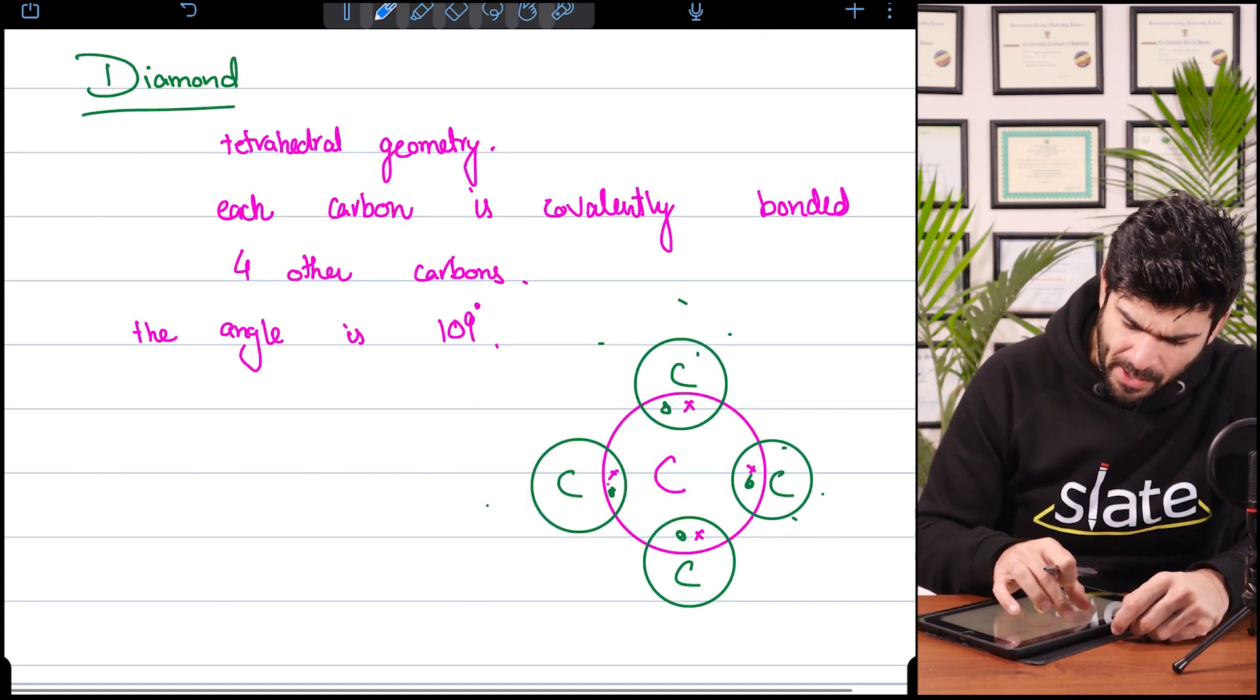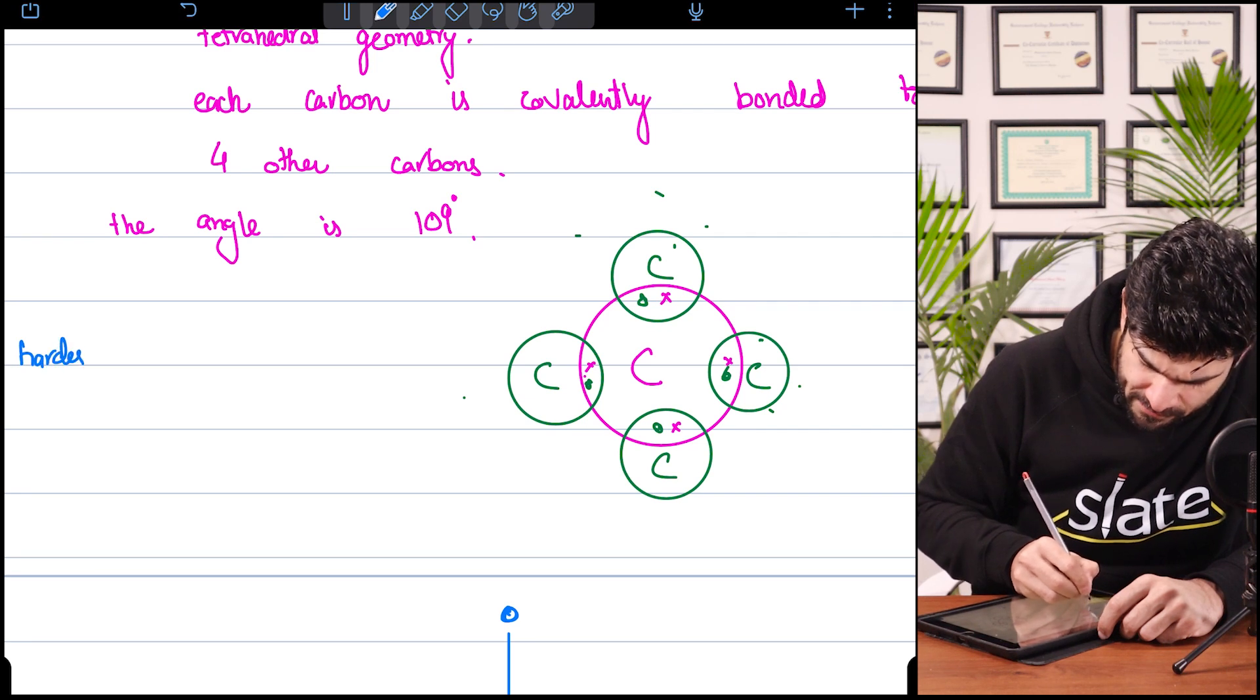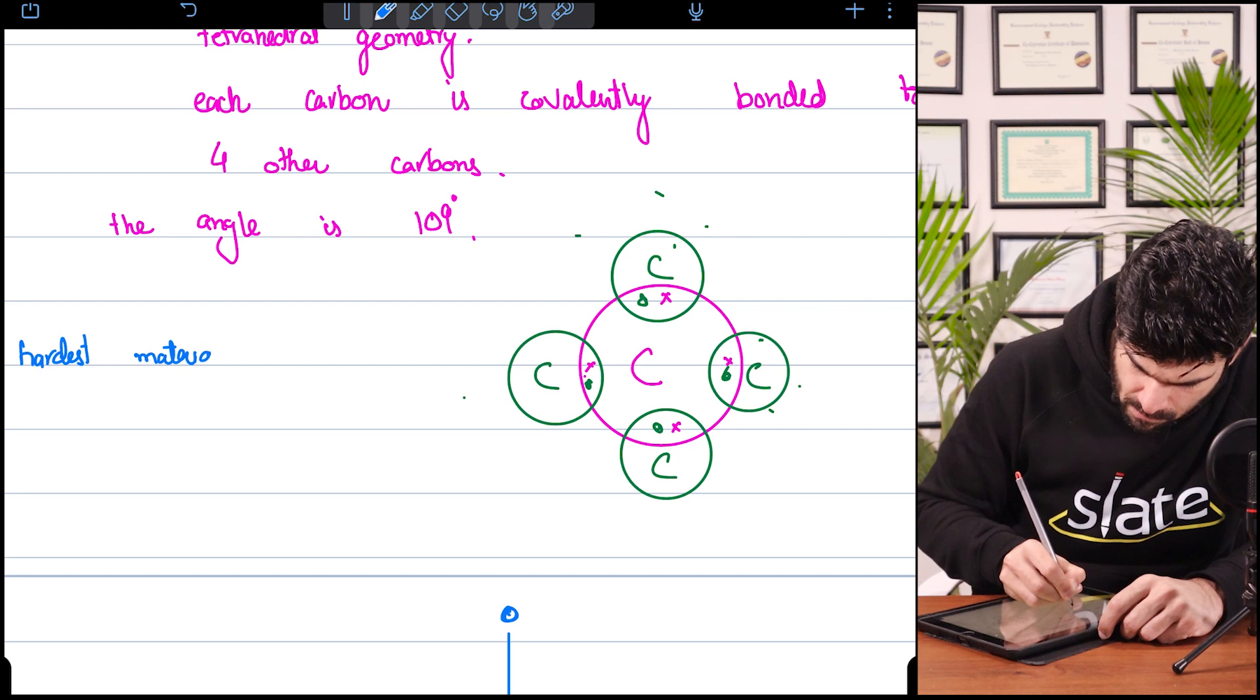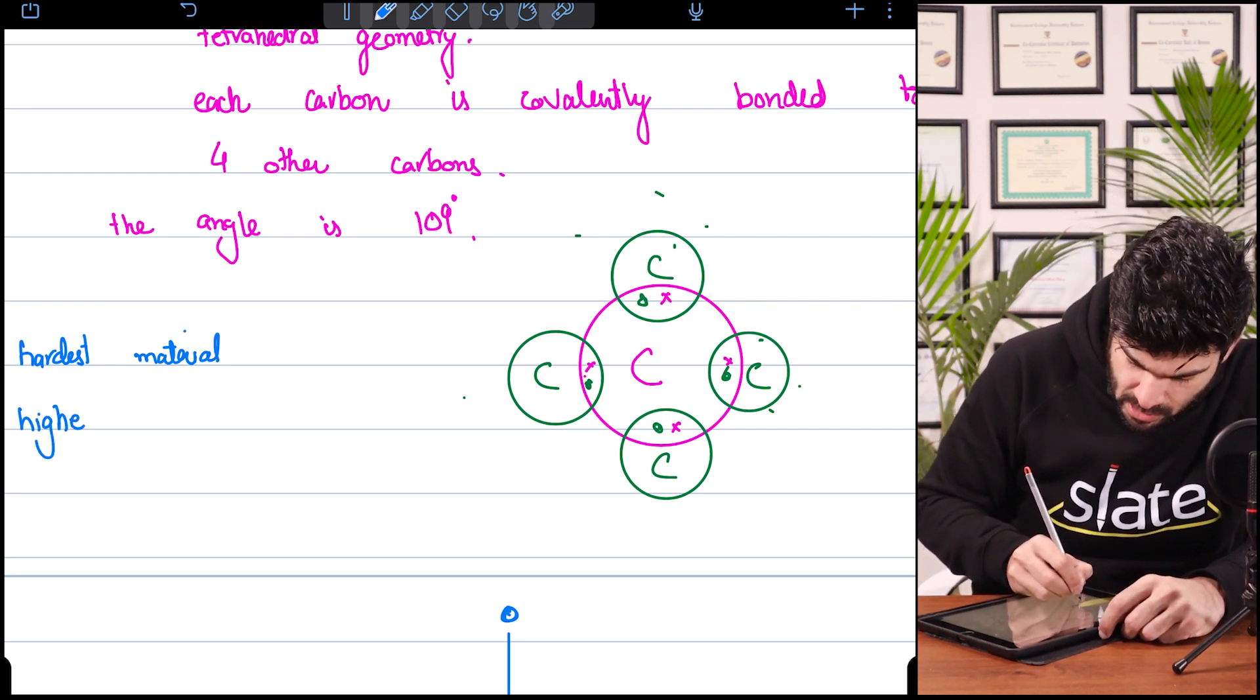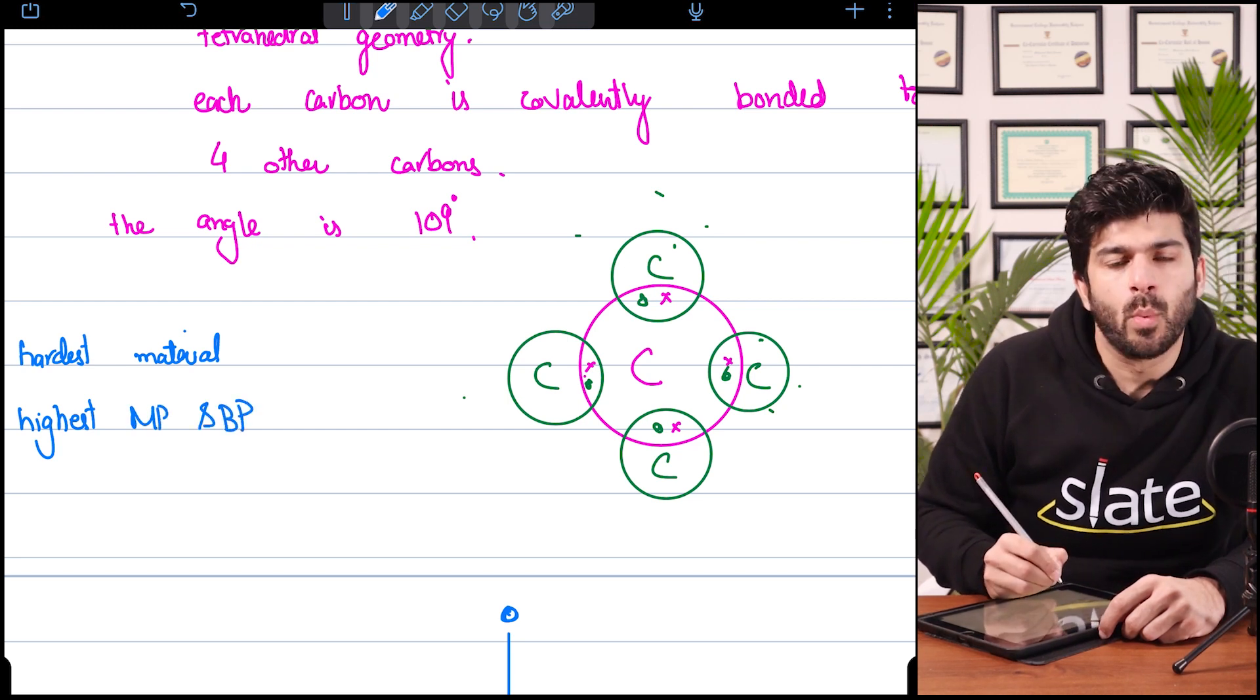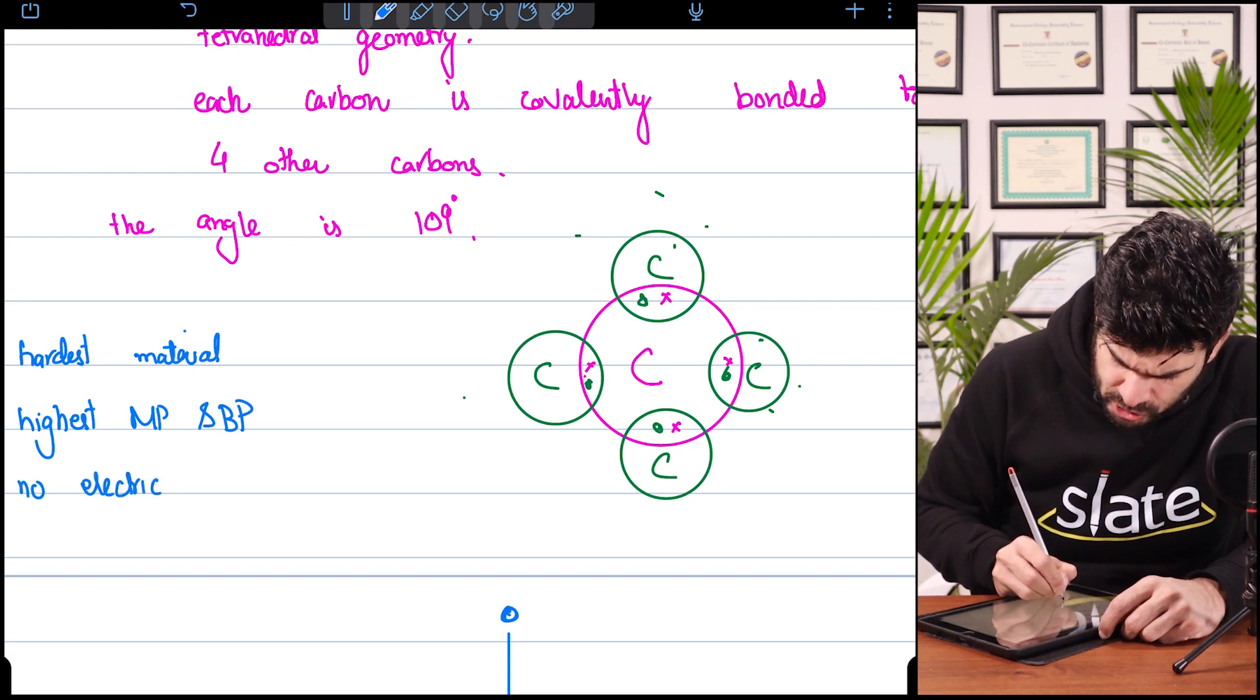What are the other properties of diamond? Hardest material out there. Highest melting and boiling points. What about electrical conductivity? No electrical conduction.